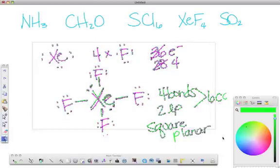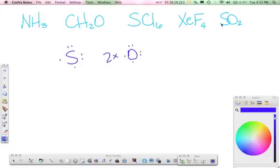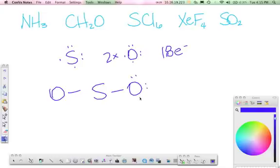Last one, SO2. Sulfur has six electrons, and each oxygen also has six. So six plus 12, 18 electrons. First element goes in the center, oxygen's on either side. Connect them. Put your six on the oxygens. That just took care of 16 electrons. Leaves us with two left. Just plop those two on sulfur.